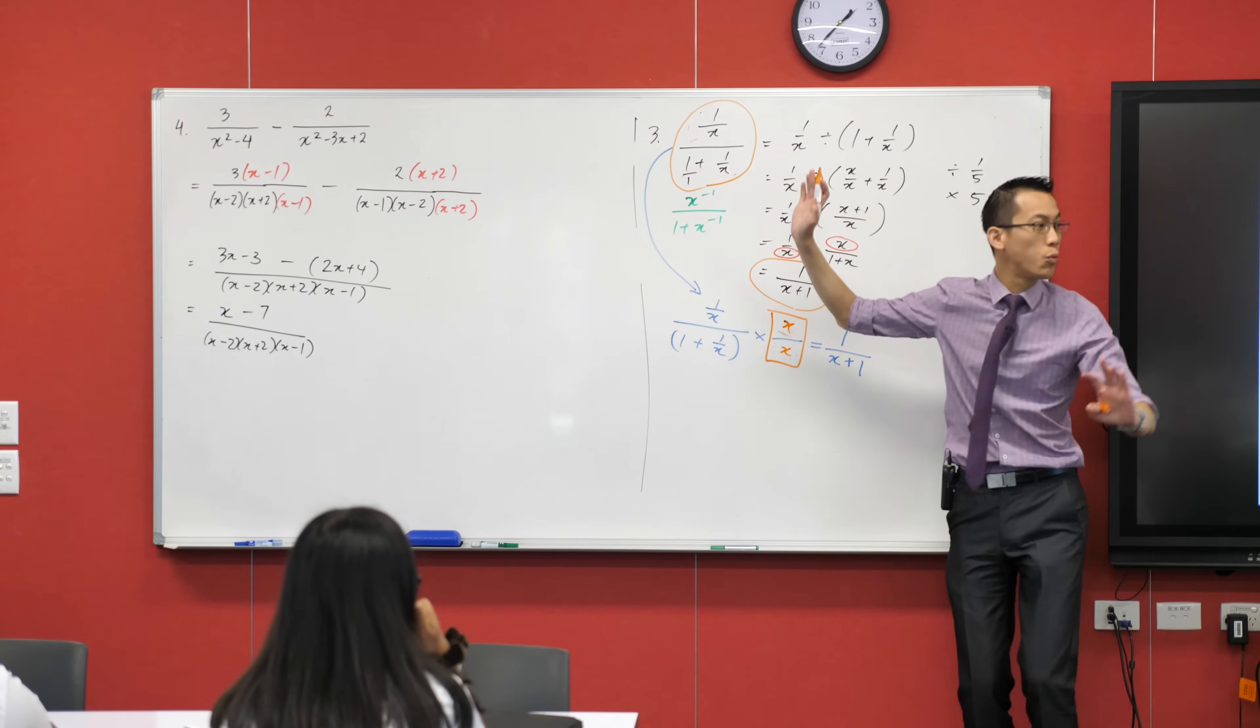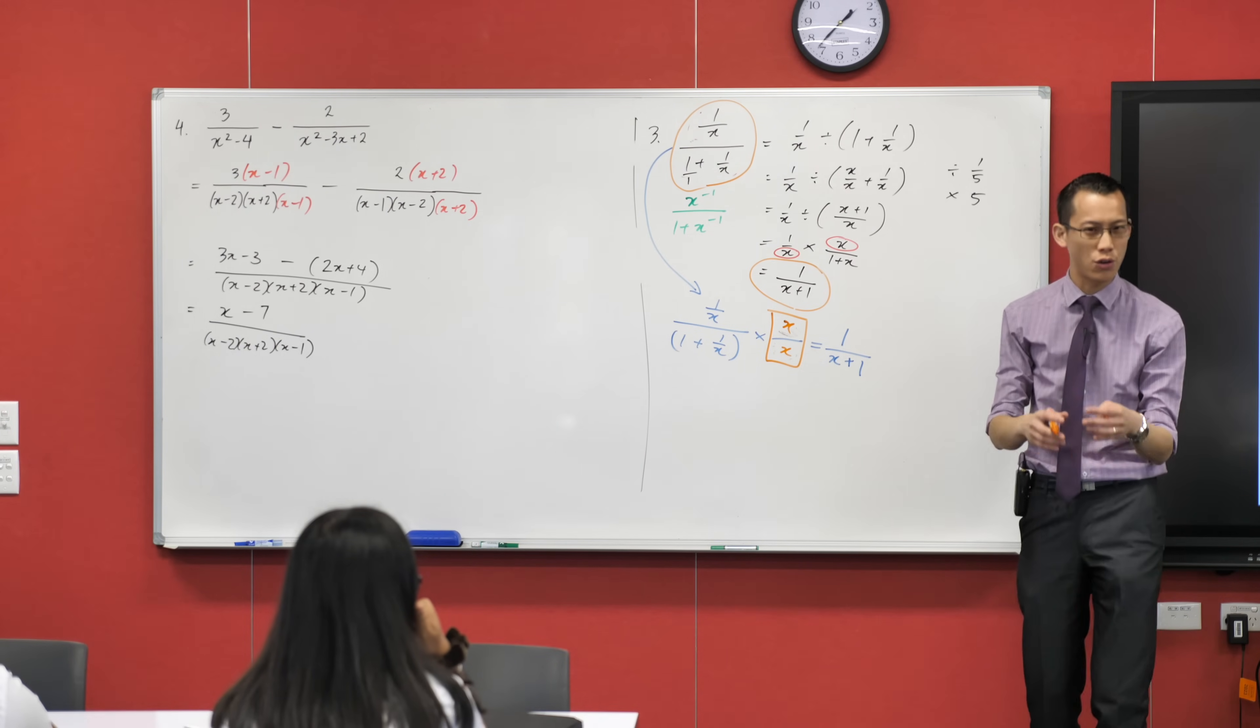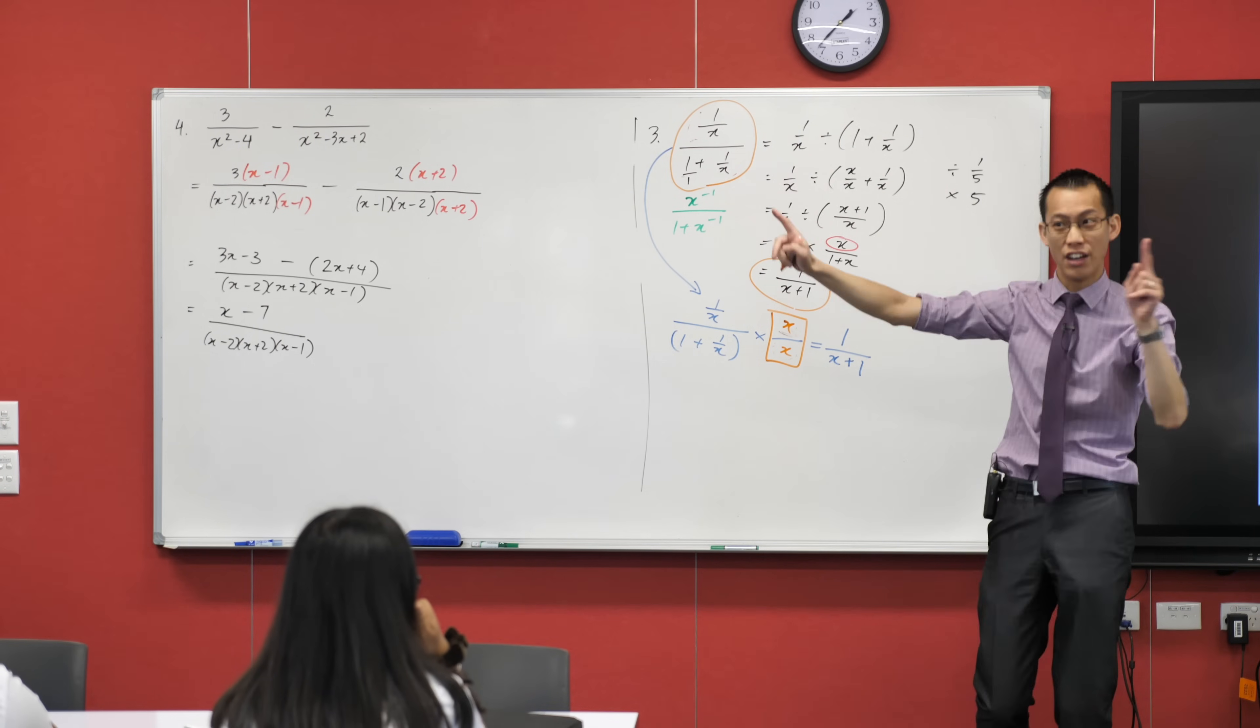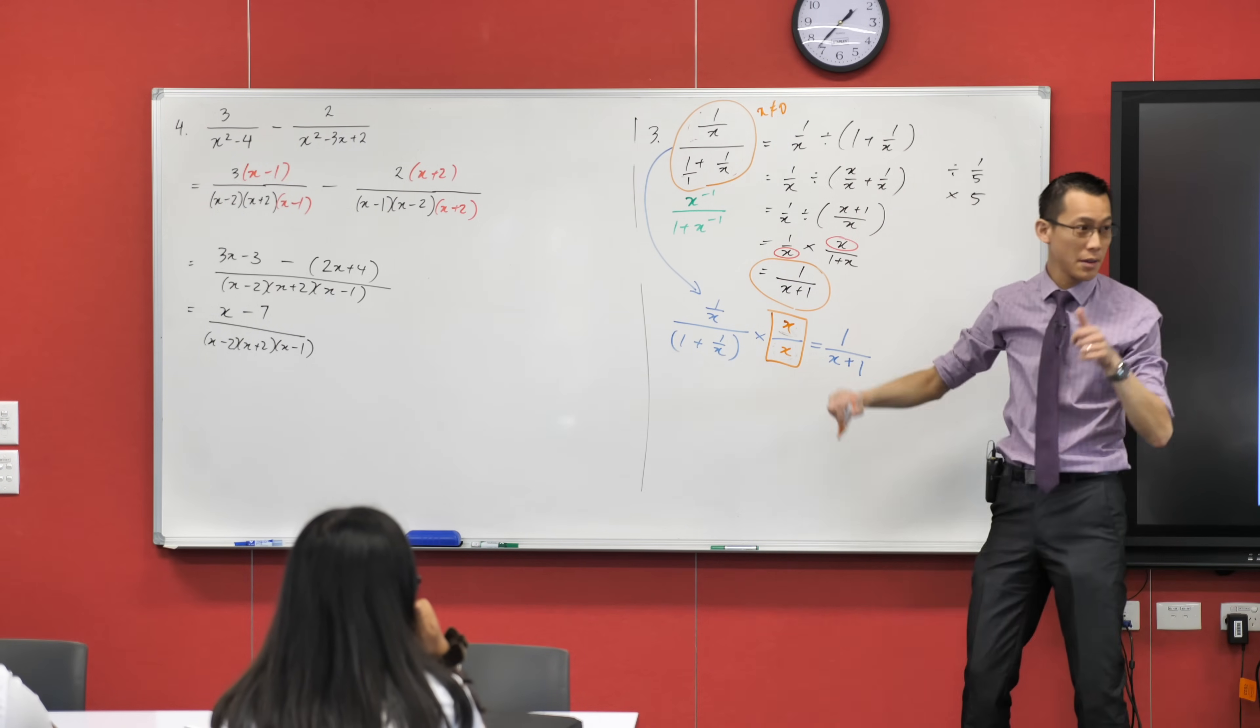And so what we're actually doing here is we're ever so slightly changing the question, right? What we started with, you weren't allowed to put x equals 0 in there. This has a name. We call it, there's a restriction on this. x can be almost anything you like. Just don't do this, okay? Now